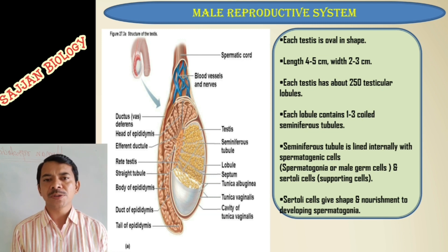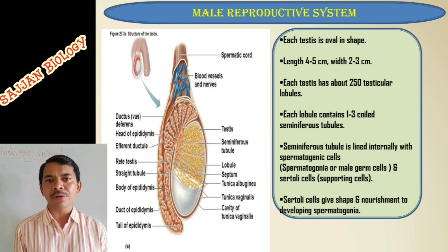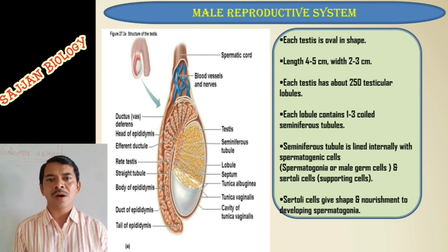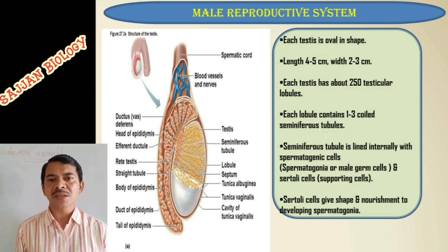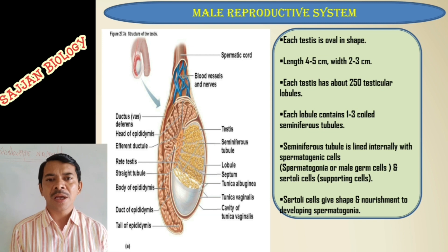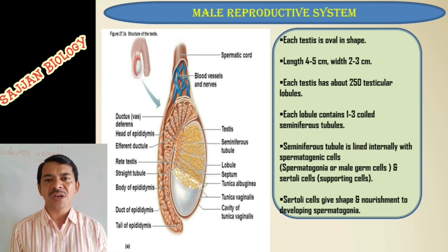To produce sperms — male gametes — these spermatogonia undergo meiosis to produce a haploid male gamete called spermatozoa, or sperms. Sertoli cells are present along with these seminiferous tubules and they help in the nourishment of developing sperms.